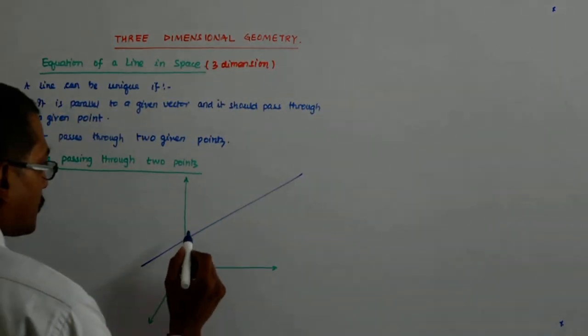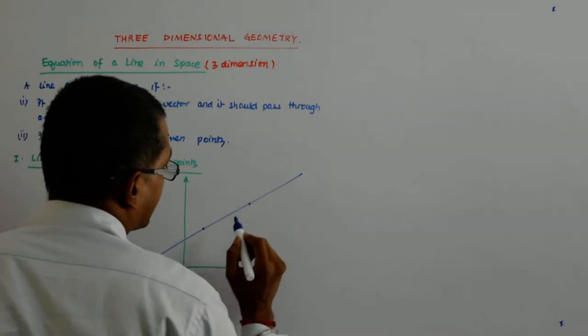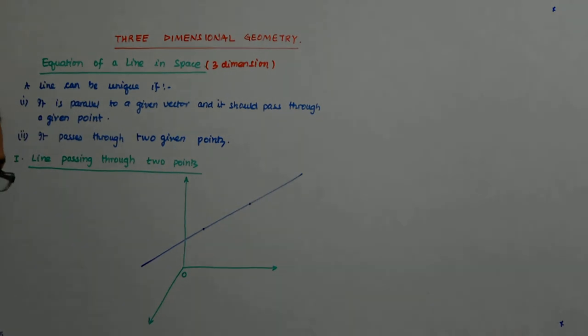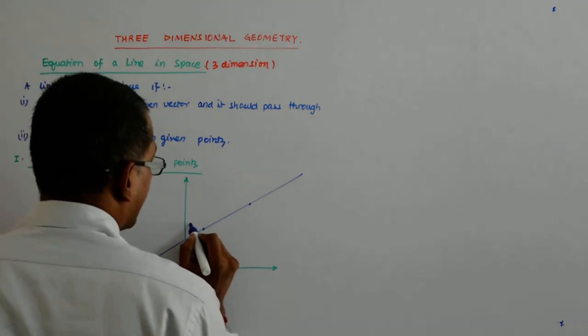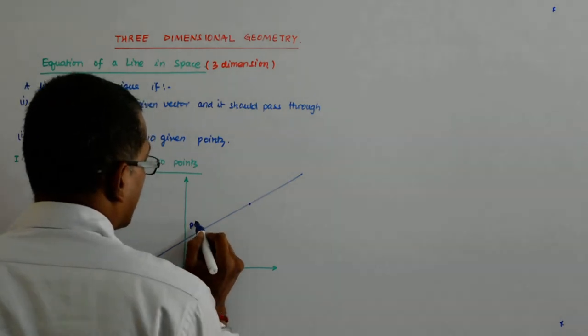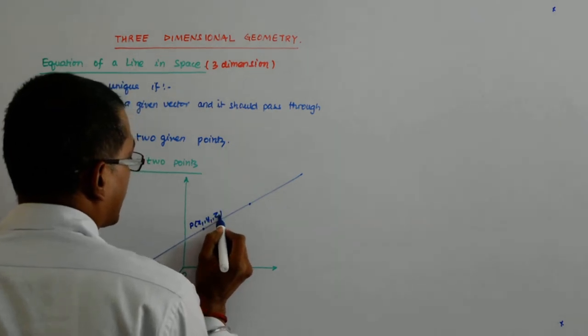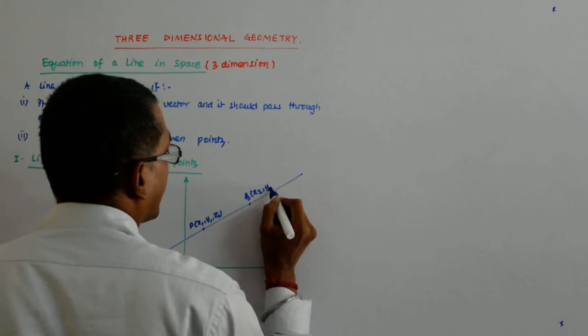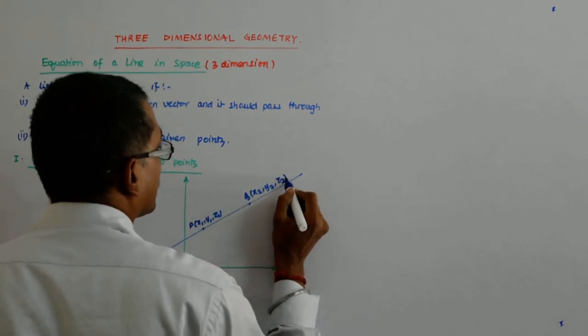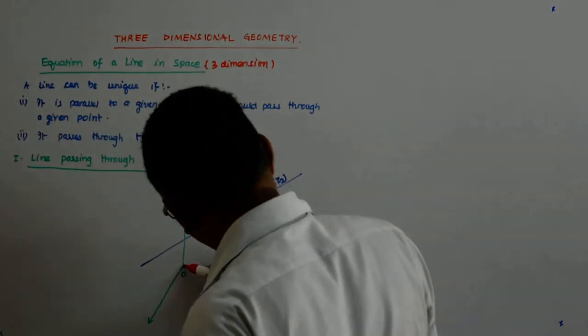So let us say it is these two fixed points with the coordinates x1, y1, z1 and x2, y2, z2. I name it P with coordinates x1, y1, z1 and this is Q with coordinates x2, y2, z2. Now what?